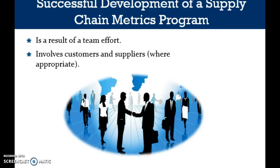Second, involve customers and suppliers where appropriate in the metrics development process. Because customers feel the impact of metrics and suppliers are actively involved in the execution of the metrics, their involvement is also critical to successful implementation. Another perspective on transaction cost and revenue focuses on how a seller's cost influences a customer's profit and on how a seller's service impacts a customer's revenue. If the cost of a seller's logistics service allows a customer to make more profit from the seller's products, the customer should be willing to buy more products from the seller.